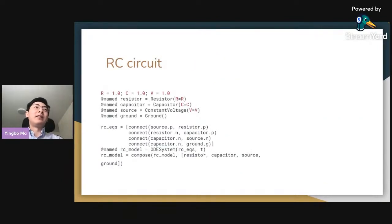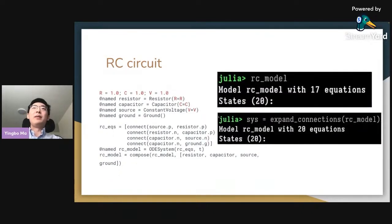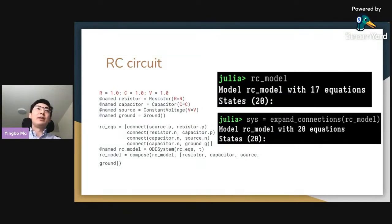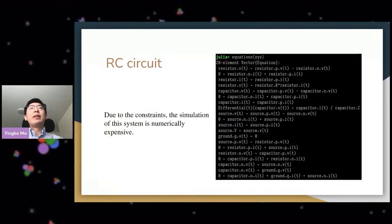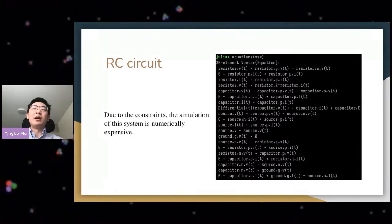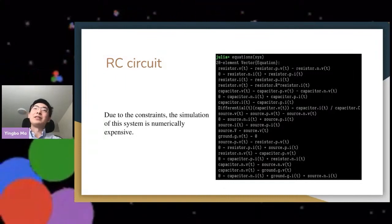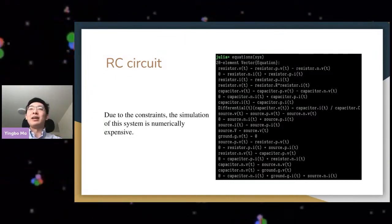To instantiate the RC circuit, we first instantiate all the components — the resistor, capacitor, constant voltage source, and the ground — and then connect them in a loop. After instantiating, we notice there are only 17 equations but 20 states. To have a balanced model we need the same number of equations as states. After running the expand_connections function, we get a balanced model with 20 equations and 20 states. Since the RC circuit is characterized by a single ODE, having 20 equations seems extremely costly numerically — and this is where ModelingToolkit's optimization comes in.